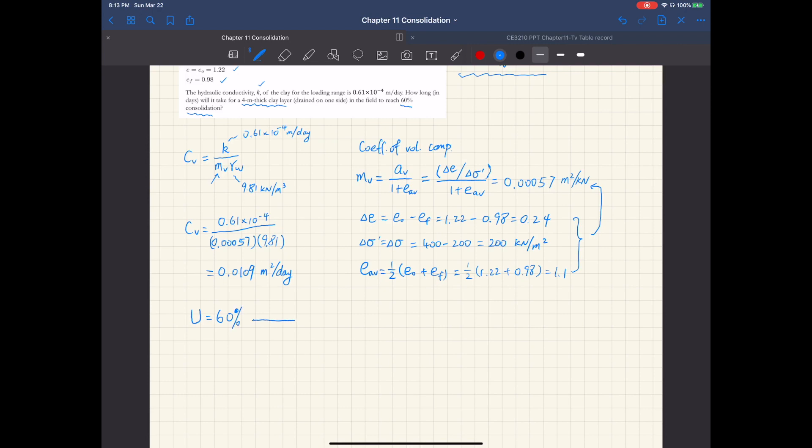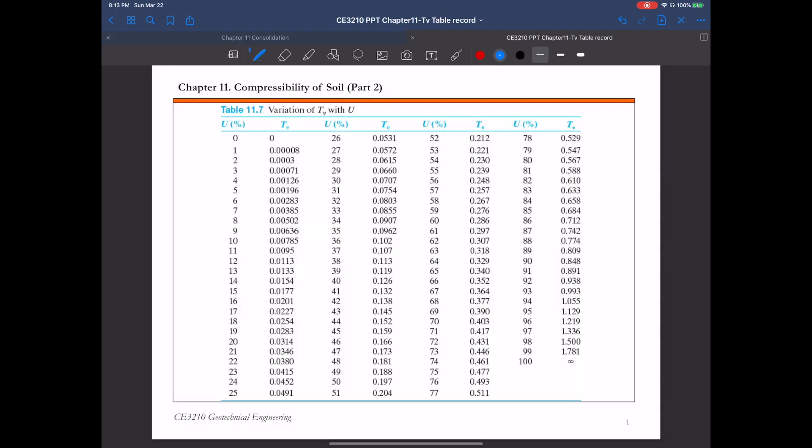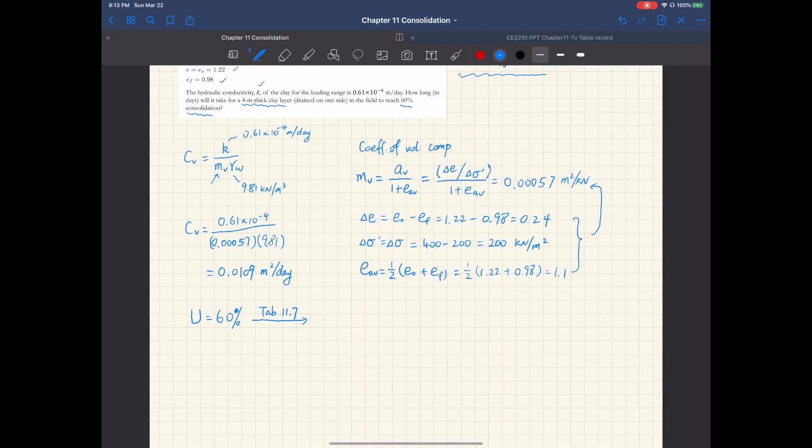And then from table 11.7, if you look at this table 11.7, for U of 60%, the corresponding time factor T sub V is 0.286.